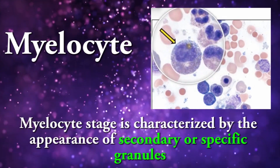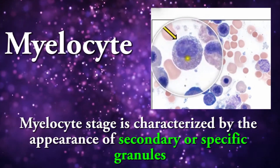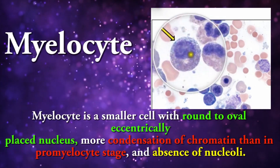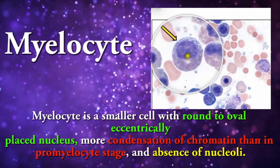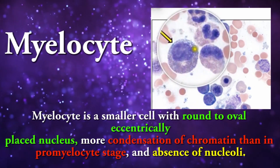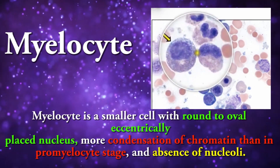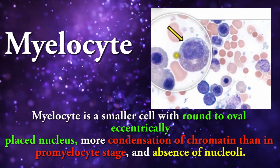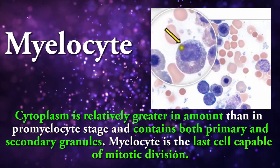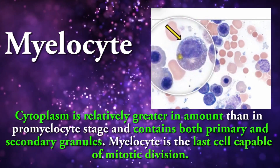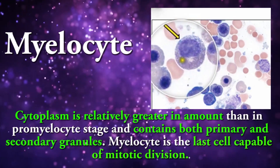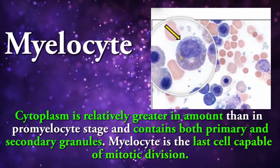Myelocyte stage is characterized by the appearance of secondary specific granules. Myelocyte is a smaller cell with a round to oval eccentrically placed nucleus, showing more condensation of chromatin than in the promyelocyte stage, and absence of nucleoli. Cytoplasm is relatively greater in amount than in the promyelocyte stage and contains both primary and secondary granules. Myelocyte is the last cell capable of mitotic division.